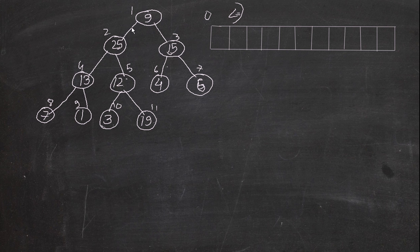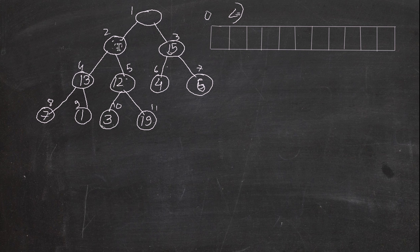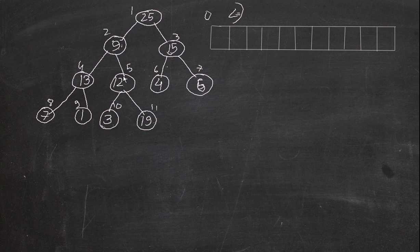Now we move on to the root node. 9 is smaller, and 9 has to be the largest because it's the root of the tree. Since 25 is larger than all three, we swap 25 and 9. Now 25 is at the root and 9 is below. We need to check again if the tree is still in max-heapify format — every parent has to be greater than its children.